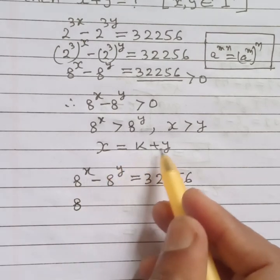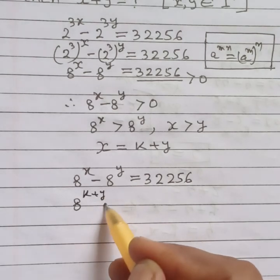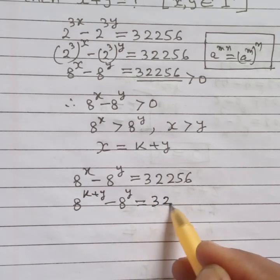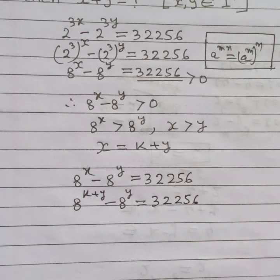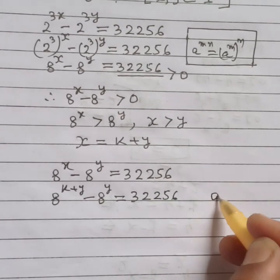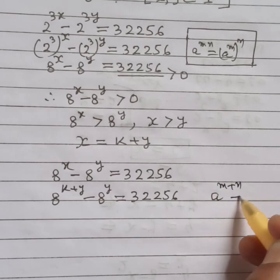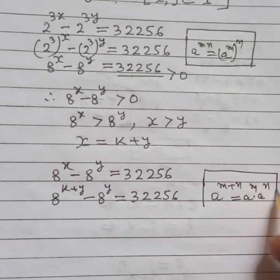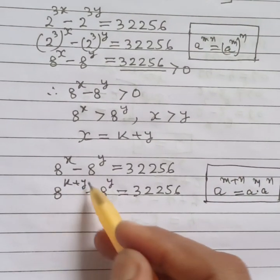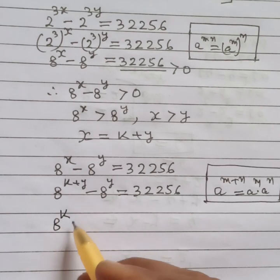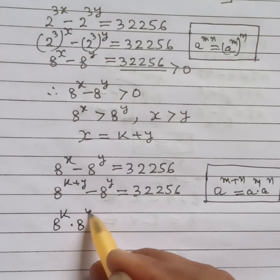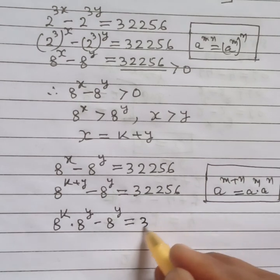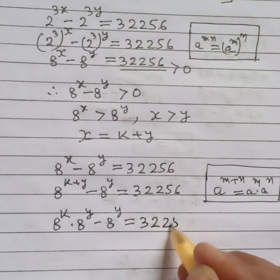Substituting x = k + y, we get 8 to the power (k + y) minus 8 to the power y equals 32256. Using the law of indices — 8 to the power (m + n) equals 8 to the power m times 8 to the power n — this becomes 8 to the power k times 8 to the power y, minus 8 to the power y, equals 32256.